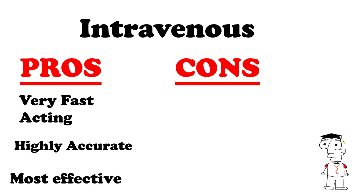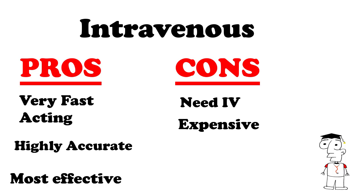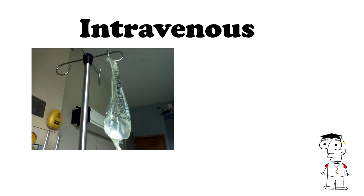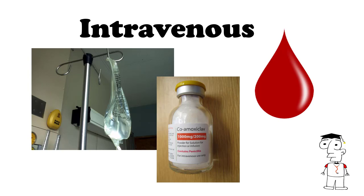Cons: you need an IV cannula in the vein and inserting them can be a little bit traumatic. It's expensive and labor-intensive to make the medications. Reactions are way more dangerous as the medication is inserted directly into the vein, and there's a risk of infection because of the IV cannula. Some examples include IV fluids, antibiotics, and blood transfusions. Many meds have an IV option, but if the PO version is appropriate, we prefer to use that one instead.